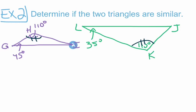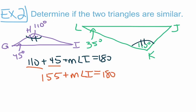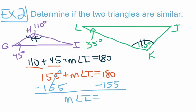Let's focus on the purple triangle to find the measure of angle I. We take 110 plus 45 plus the measure of angle I equals 180. Combining like terms, 110 and 45 give us 155, so 155 plus the measure of angle I equals 180. Subtracting 155 from both sides, the measure of angle I equals 25 degrees.